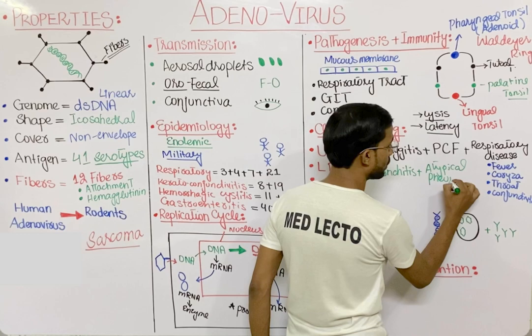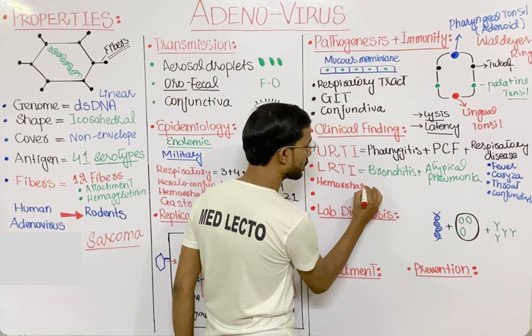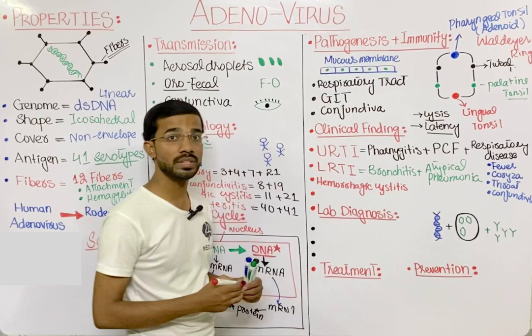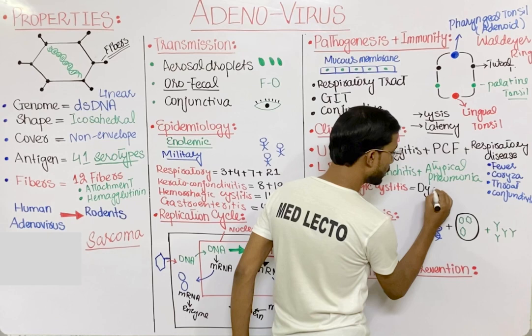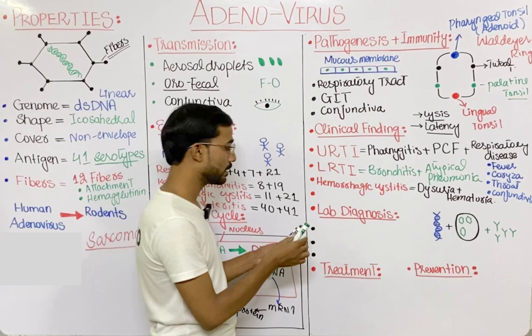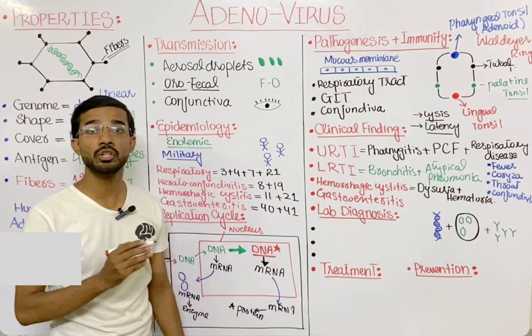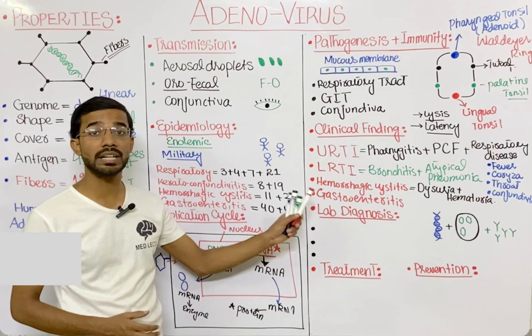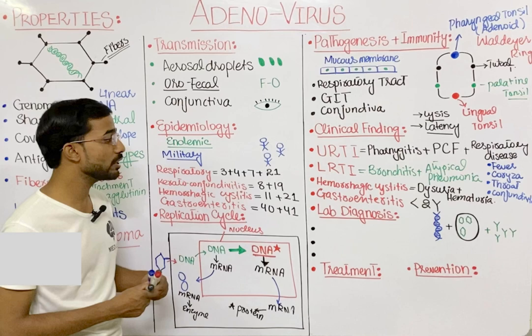The third clinical feature is hemorrhagic cystitis, where you will see dysuria (difficulty in urination) and hematuria (blood in the urine). The last clinical feature is infantile gastroenteritis, presenting with non-bloody diarrhea in children less than two years of age.